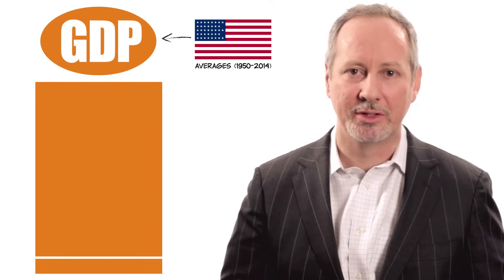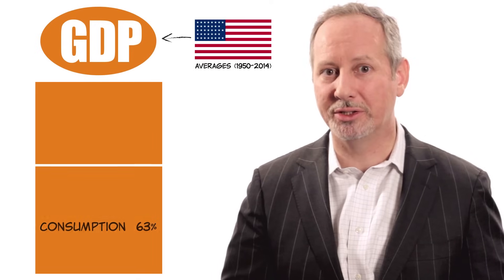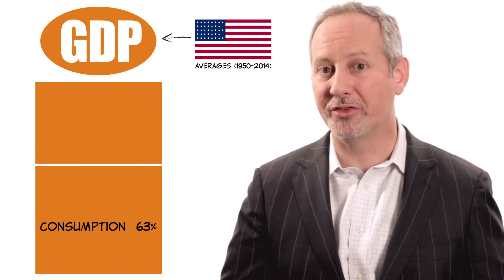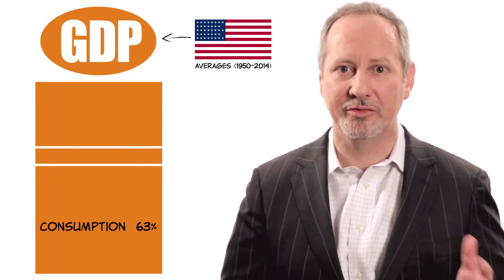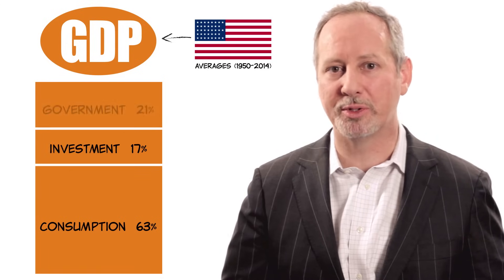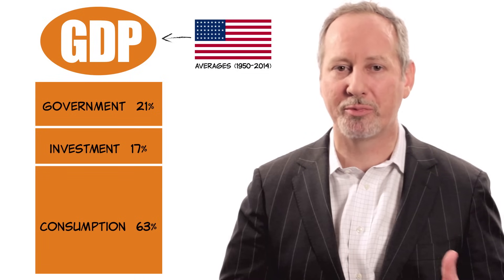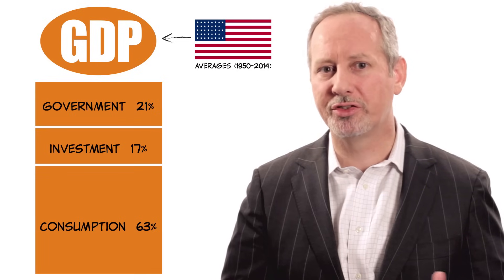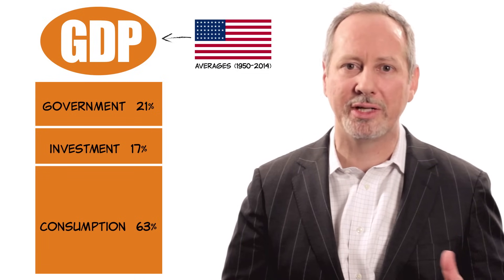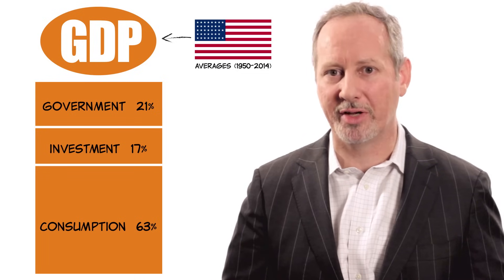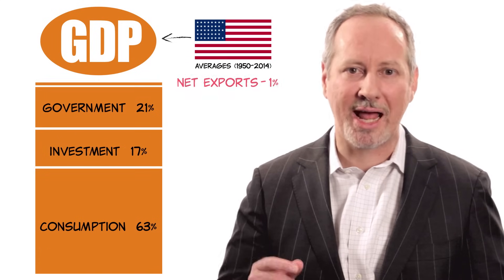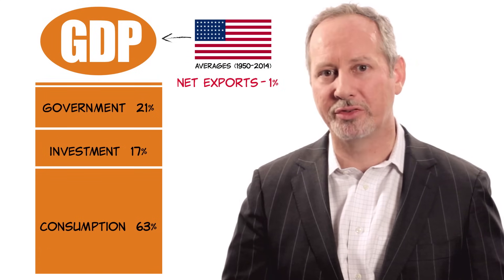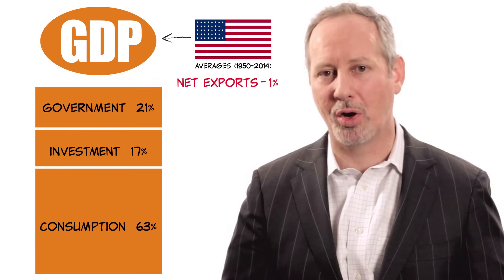Now, how big are each of these categories? Consumption is the biggest, at around 63% of GDP. Investment and government purchases make up the rest, with government purchases usually a bit bigger than investment. In the United States, net exports is usually quite small.